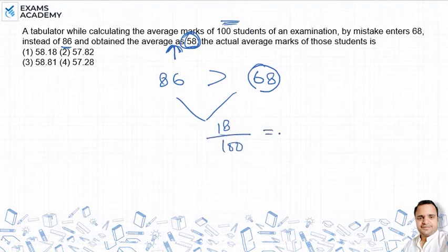जो value आएगी वो कितनी आएगी - 0.18 आएगी। 0.18 वो value है जिससे यह average increase कर जाएगा। Initial जो average की value थी 58 उसमें add कर देंगे 0.18